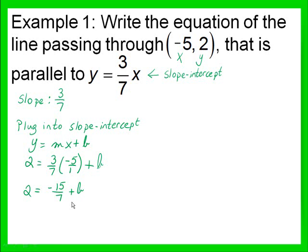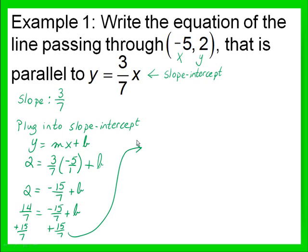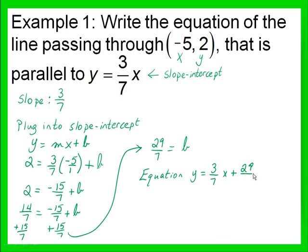We need to move the negative 15 over 7 to the left-hand side of the equation to get b by itself. Before doing that, I want to write the number 2 as a fraction with 7 as its denominator, so that makes 2 become 14 over 7. Now we can add 15 over 7 to both sides of the equation. 14 plus 15 is 29 over 7, and this equals b. So our equation will be y equals 3 over 7x plus 29 over 7.